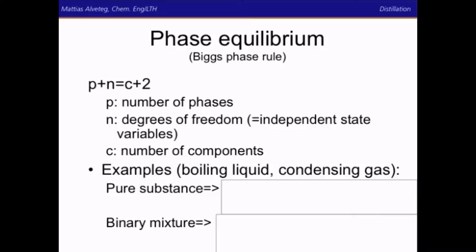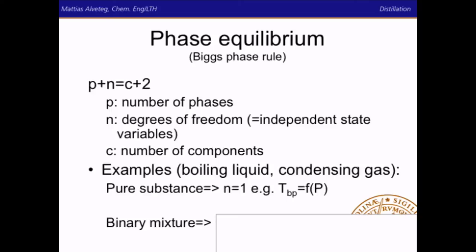If we have phase equilibrium we can use Gibbs' phase rule, which states that the number of phases plus the number of degrees of freedom equals the number of components plus two. For a boiling liquid in equilibrium with a condensing gas with a pure substance — one component — please calculate the degrees of freedom. The answer is one degree of freedom, meaning that if we know the total pressure, we also know the boiling point. The boiling point is determined by the pressure.